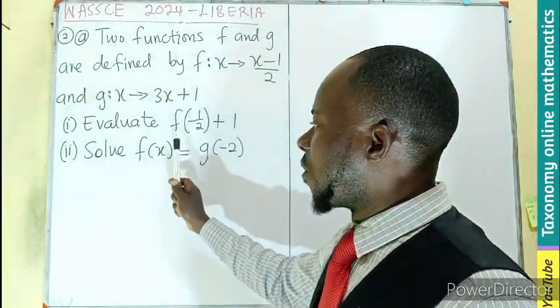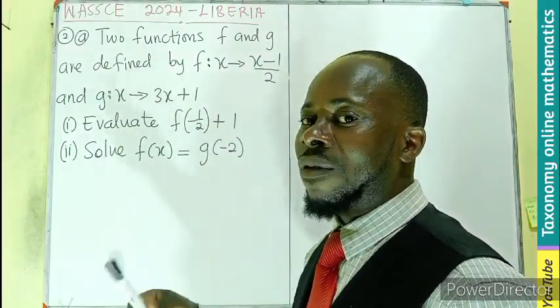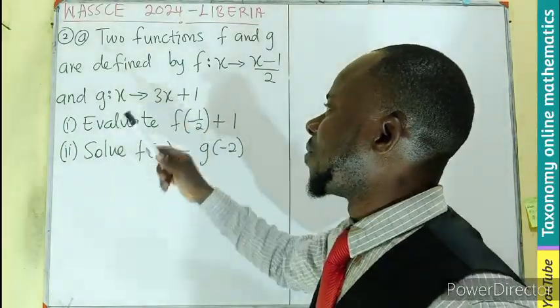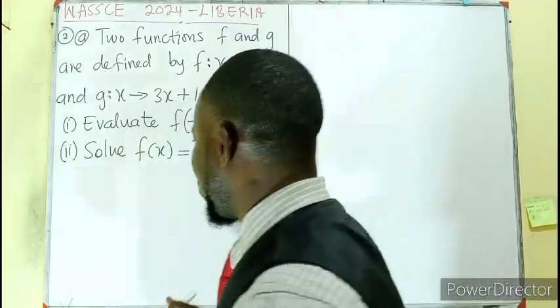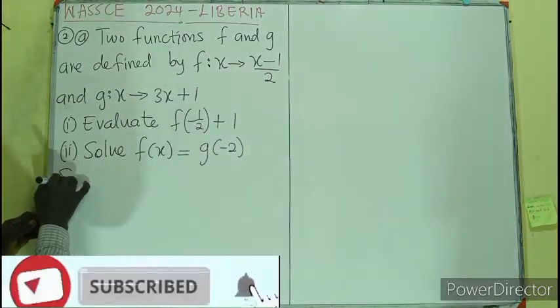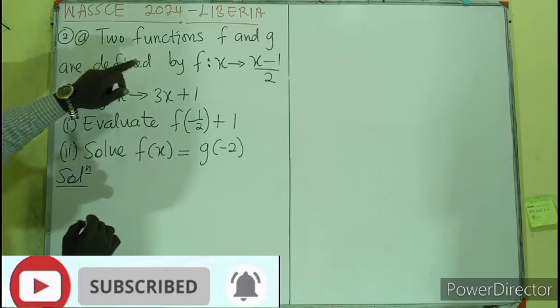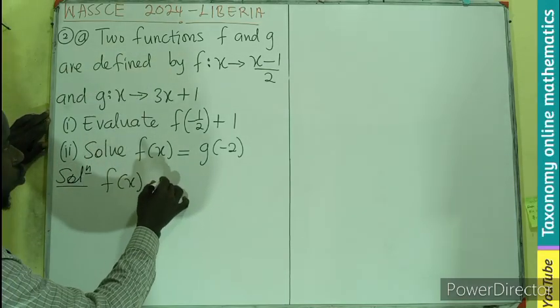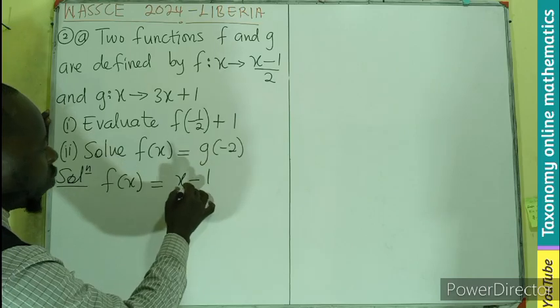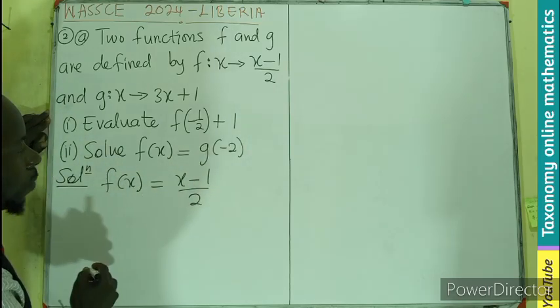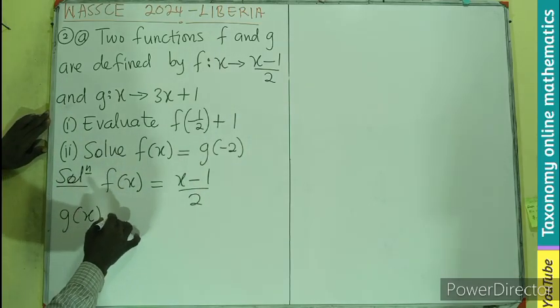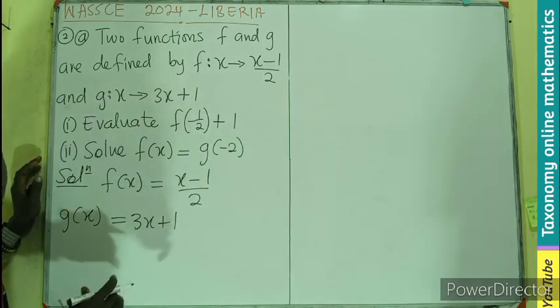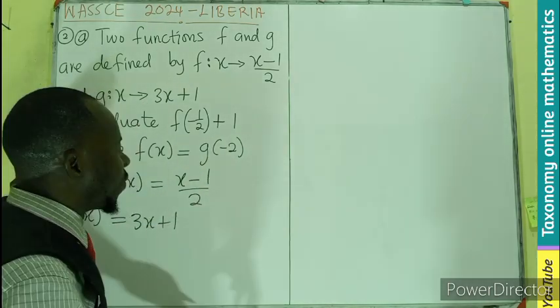Then you solve f(x) equals g(-2), the image of -2 under the function g(x). So let's first translate the functions into equations: f(x) should equal (x-1)/2, and g(x) equals 3x+1 by definition of an equation.